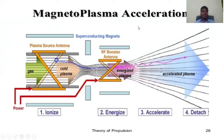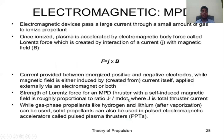Magnetoplasma acceleration diagram: superconducting magnet, plasma source antenna, RF booster antenna, energized plasma, accelerated plasma, cold plasma, gas, and power. Process steps: (1) ionize, (2) energize, (3) accelerate, (4) detach.